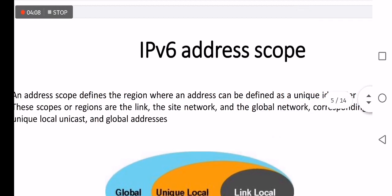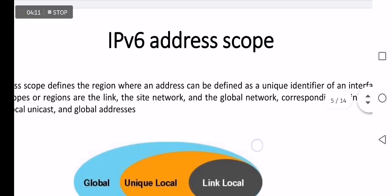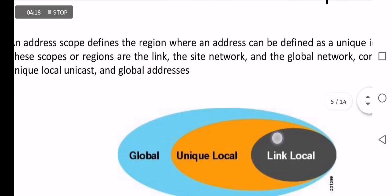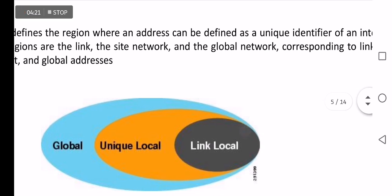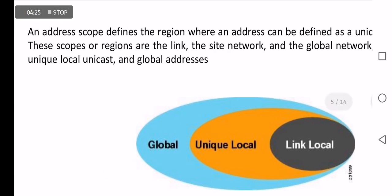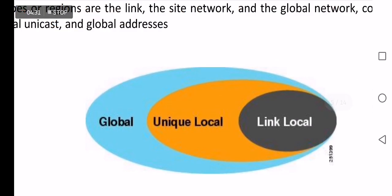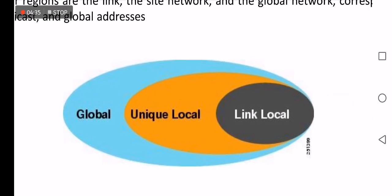IPv6 address scope defines the region where an address can be identified as a unique identifier for an interface. These scopes or regions are the link, the site network, and the global network, corresponding to link-local, unique-local, and global addresses. The inner ellipse represents link-local, corresponding to LAN addresses. Unique-local corresponds to site-ranged addresses of v6, and the global unicast address represents routable addresses.